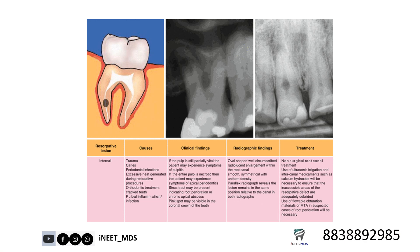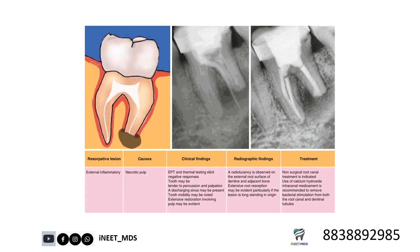Internal resorption radiographically presents as an enlarged canal in one particular region, which denotes the internal resorption. External resorption radiographically presents as a loss of the external root surface.